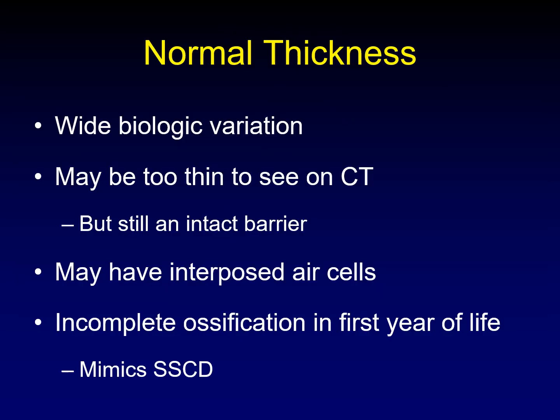There's wide biologic variation from person to person and even side to side on an individual. Sometimes the tegman gets so thin that you can't even see it on CT, but it still presents an intact barrier between the dura and the air of the temporal bone. Be careful when evaluating the tegman in infants, because it may be incompletely ossified in the first year of life and may look like superior semicircular canal dehiscence — but that's just normal progression of ossification.